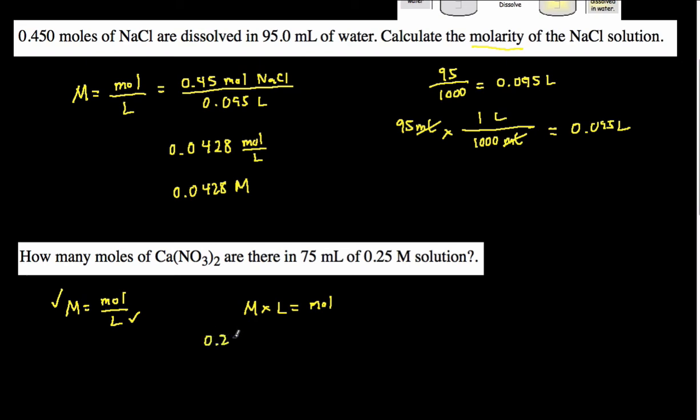Okay. So we have the molarity. It's 0.25 molar. And then the liters, we have 75 milliliters. So to get into liters, we can do the same thing we did up here. Just divide it by a thousand. 75 divided by a thousand is going to give us 0.075 liters. So multiply it by 0.075. And then you're going to get 0.0188 moles of calcium nitrate.